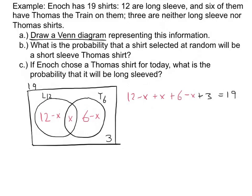So: (12 minus X) plus X plus (6 minus X) plus 3 equals 19. Combining like terms gives negative X plus 21 equals 19, so X equals 2. Now the intersection is 2, the Thomas-only crescent is 4 (6 minus 2), and the long-sleeve-only crescent is 10 (12 minus 2).